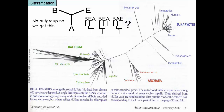We don't really know what the root of that tree is. Is the common ancestor — the last universal common ancestor — at the point where archaea is the outgroup of bacteria and eukaryotes? Or are bacteria the outgroup of eukaryotes and archaea? Or are eukaryotes the outgroup of bacteria and archaea? Just from ribosomal RNA alone, we have this pattern but we don't know which of these three trees is more accurate.